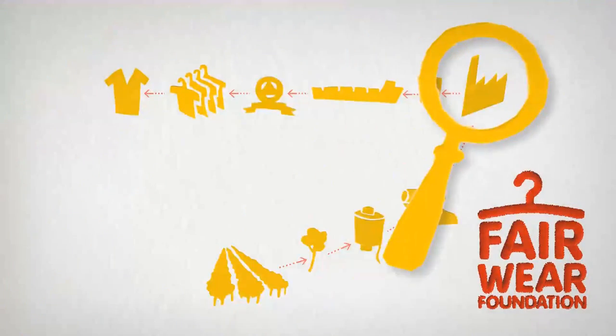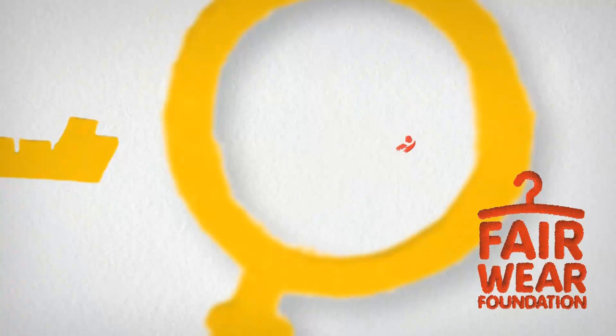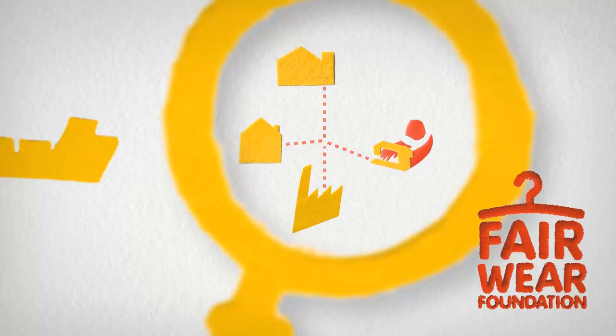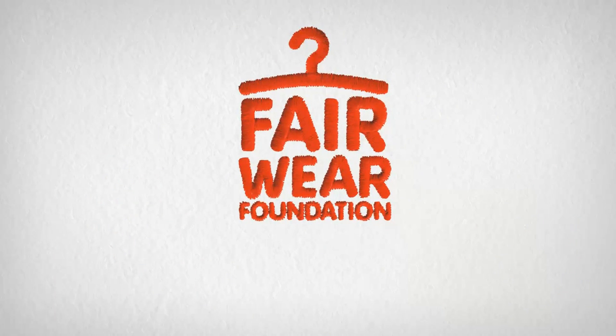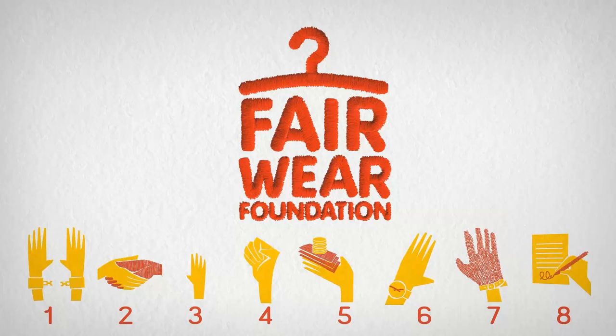Well, Fair Wear Foundation focuses on the parts of the supply chains where clothes are manufactured. Many labor violations take place in sewing factories. And as sewing is very labor-intensive, lots of workers are involved. At the heart of Fair Wear Foundation's work are eight labor standards, which are based on United Nations principles and cover workers' basic human rights.